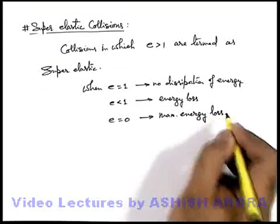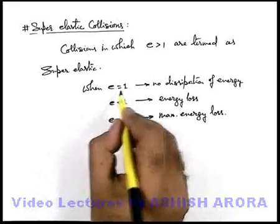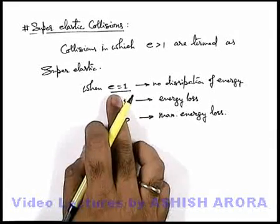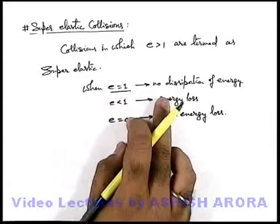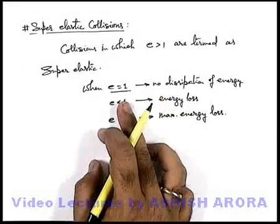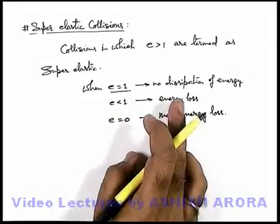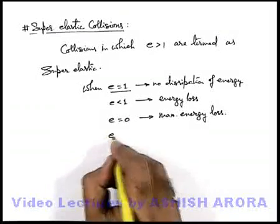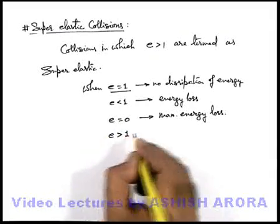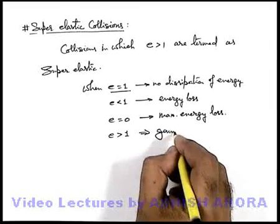So we can state, as the value of e increases and approaches e equal to 1, that is the stage where no loss of energy takes place, or kinetic energy of the bodies before collision and after collision would be equal. With this analogy we can state that when e is more than 1, this implies gain of energy.